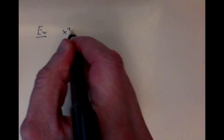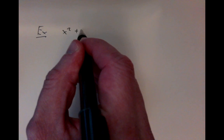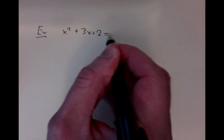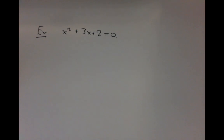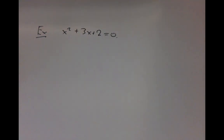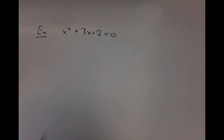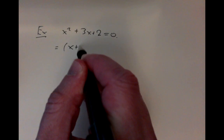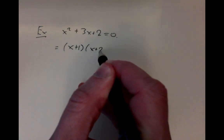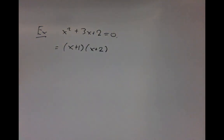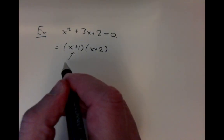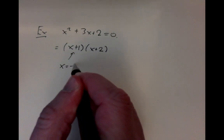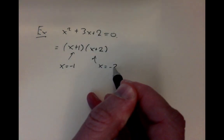Let's recall some basic facts about polynomial functions. A simple example: we look at an equation like x squared plus 3x plus 2 equals 0, dealing with ordinary real numbers. This polynomial factors as (x+1)(x+2), so you can find the roots. From the first factor you get x equals minus 1, and from the second you get x equals minus 2.